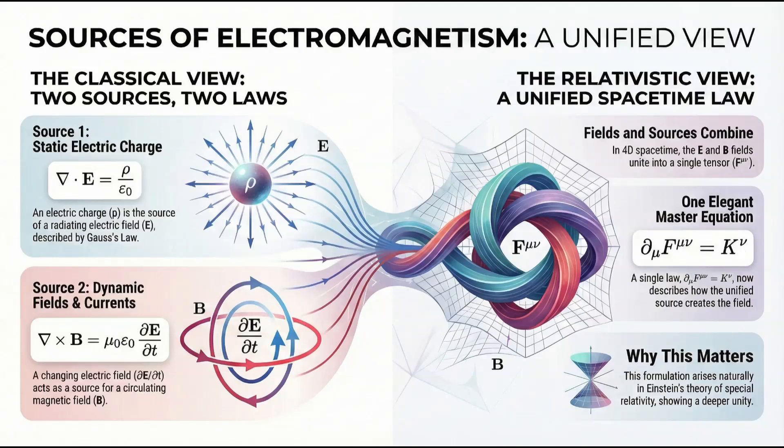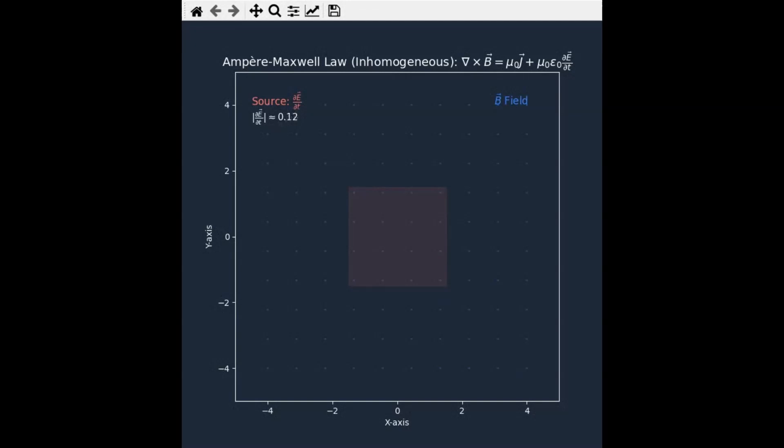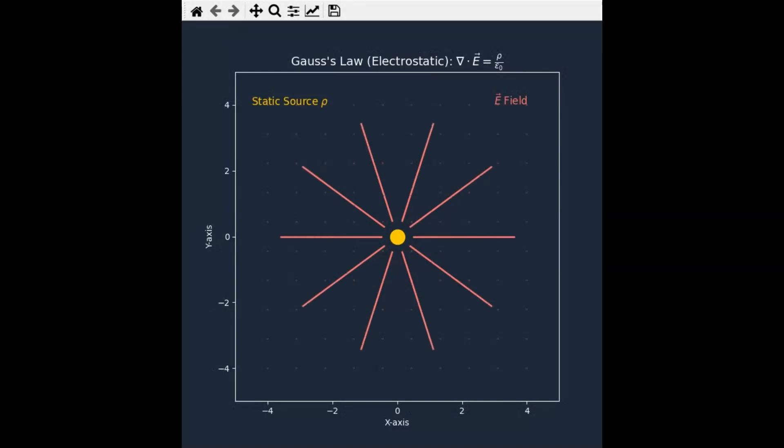This is the brief on the covariant formulation of Maxwell's equations. We're going to talk about how classical electromagnetism, the rules that connect things like charge and current to the fields they generate, gets this really beautiful and simple makeover when you look at it through the lens of four-dimensional space-time.